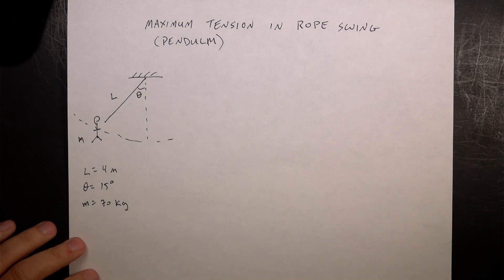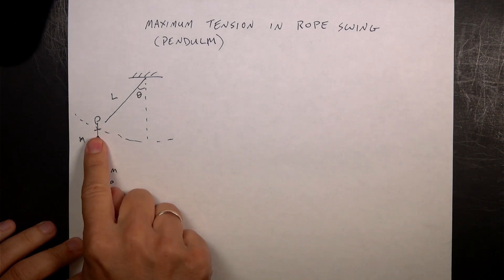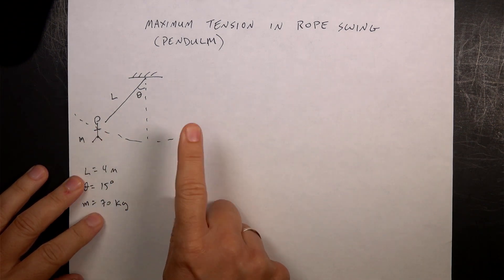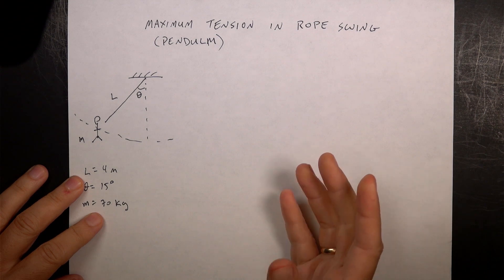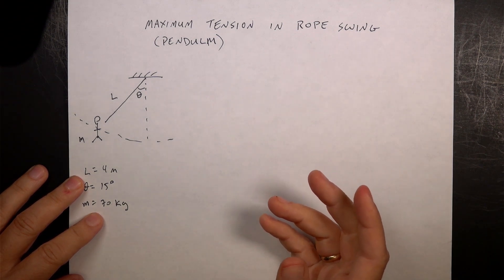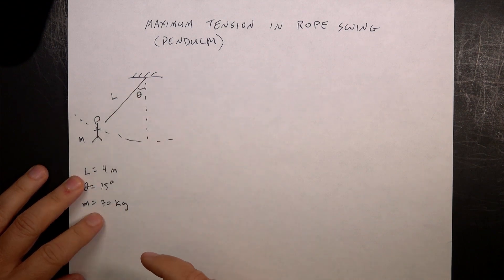So in this case, I have a rope swing. Suppose there's a person on a rope swing. They start from here from rest. They let go and they swing down here, and then at some point maybe they let go, maybe they don't. And the question is, what's the maximum tension in the string right there?